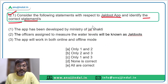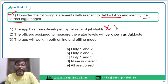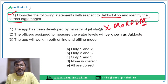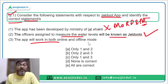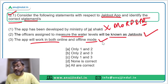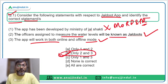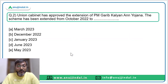Now coming back to the question: the app has been developed by the Ministry of Jal Shakti — that is incorrect, it was developed by the Ministry of Rural Development and Panchayati Raj. The statement that officers will be known as Jal Doots is correct, and the app working in both online and offline mode is also correct. Therefore the correct answer is option B — only statements two and three.